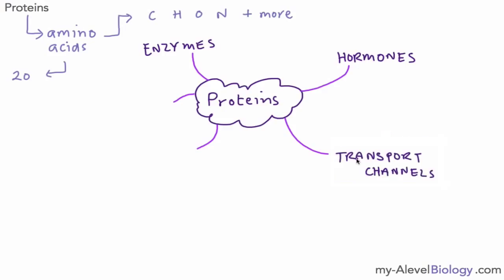We have something quite specific like transport channels that are found in the cell membrane, and these help to transport substances in and out. We have structural proteins and two examples are keratin and collagen. Collagen is required for cartilage, keratin for hair and nails.